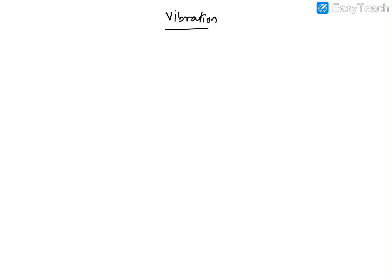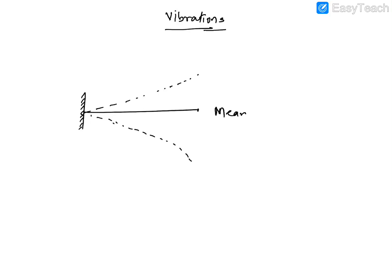Whenever a body vibrates it will produce sound — we may or may not hear it depending upon the frequency. Consider a metallic ruler clamped at one side: if you apply some force, it will start vibrating, moving to and fro — up and down. The middle position is the mean position and the ends are extreme positions. The distance it goes up is called the amplitude.